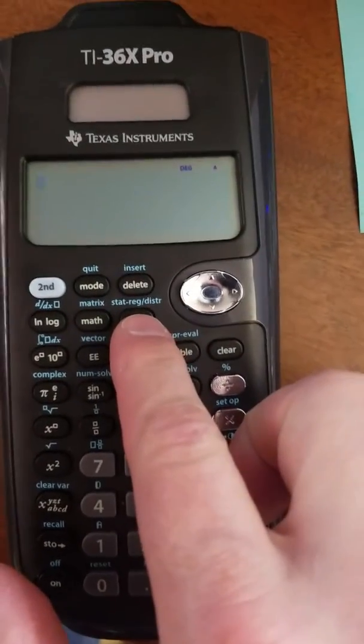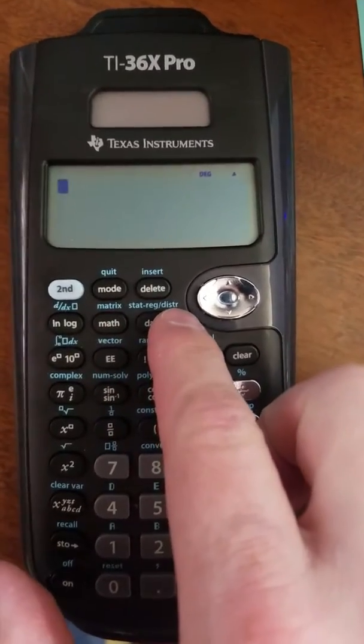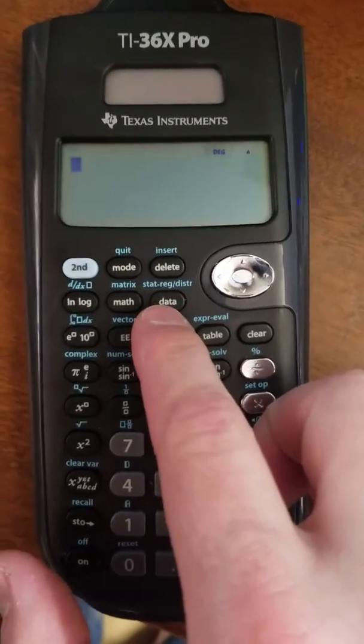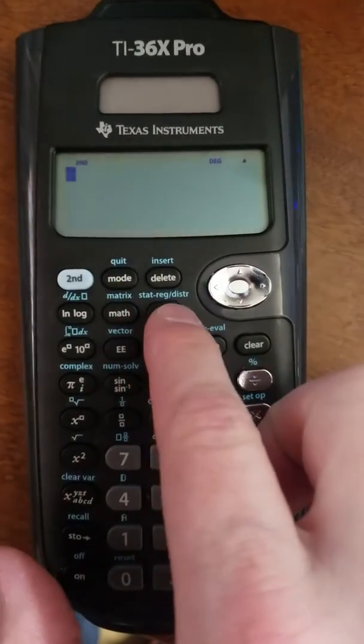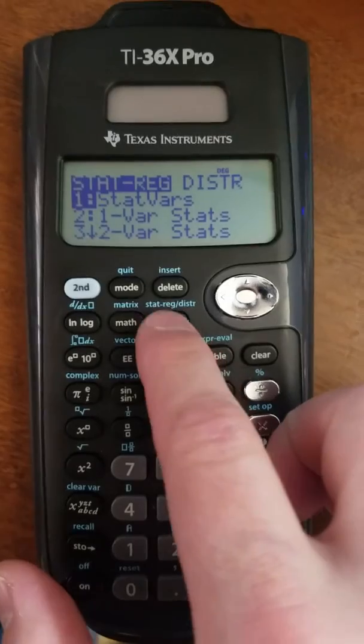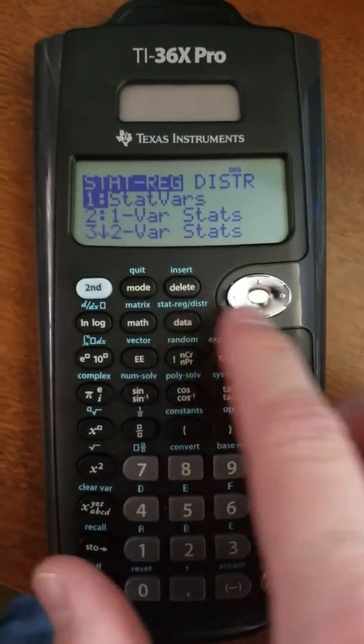We're going to want to go into the distributions menu, which you can see is in blue here. It's the DISTR right there. So I'm going to have to press the second key, then get into my stat reg and distributions.